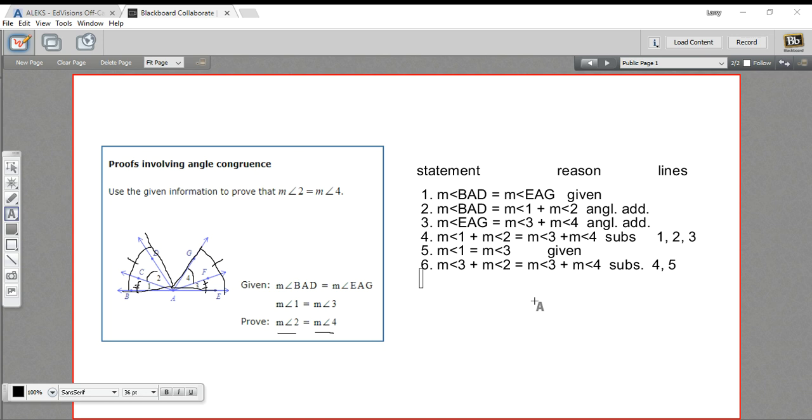All right, now we can just go ahead and subtract away that measure of angle 3 from both sides of that equation. And that's going to leave us with the measure of angle 2 equals the measure of angle 4. That's what we wanted to prove. How did we get there? Well, we used, I'm thinking your list will be called addition and subtraction properties.